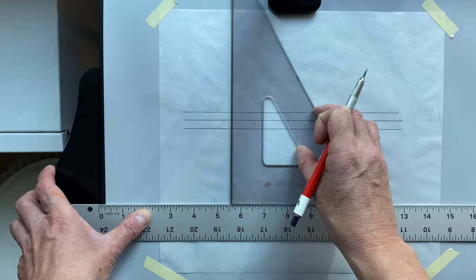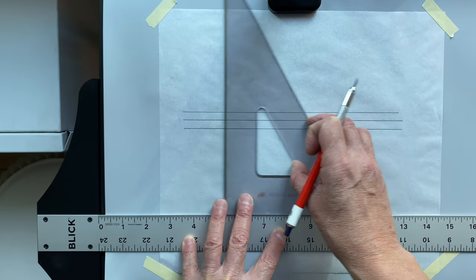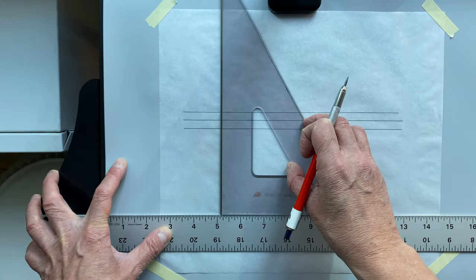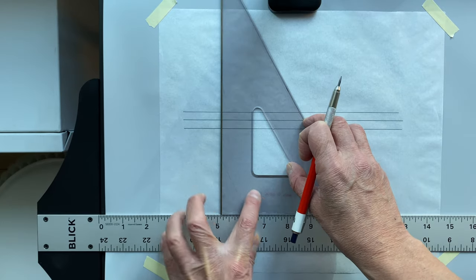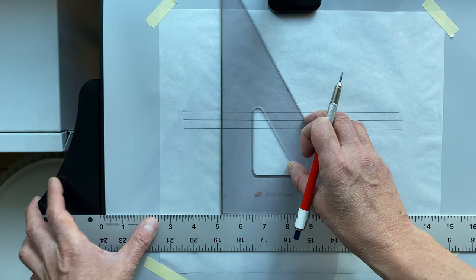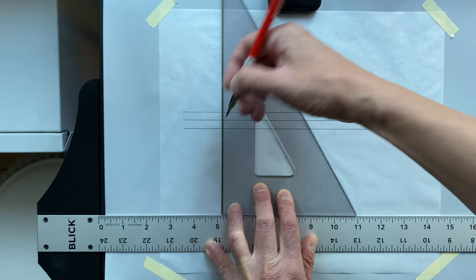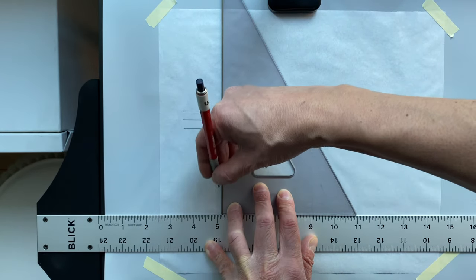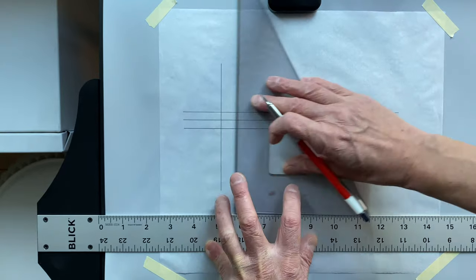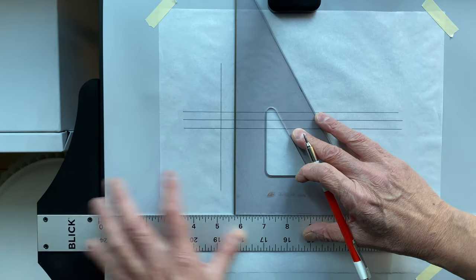And same thing if you want to do vertical lines. So you kind of line things up, again, press up against it. It's a little bit more tricky because now you have to kind of hold on to your, to the blade, as well as the triangle. Make sure, again, press up against.